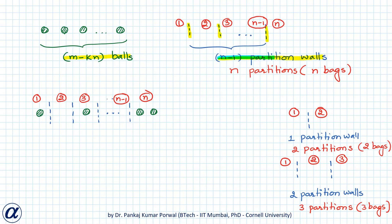These n minus 1 partition walls divide our space into n partitions or n bags. For example, if we have one partition wall, there will be two partitions of the space; if there are two partition walls, there will be three partitions. So when there are n minus 1 partition walls, there will be n partitions of our space.